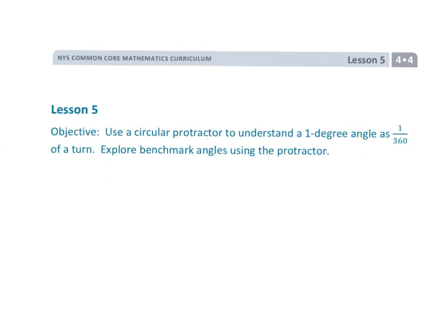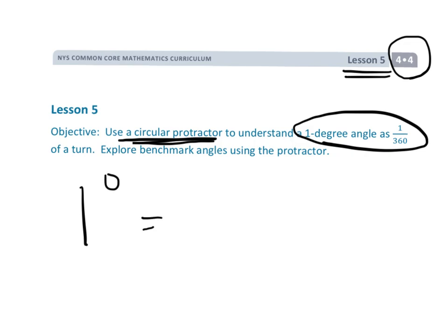And that is grade 4, module 4, lesson 5, using a special protractor called a circular protractor to really understand how to measure angles and really, in particular, understand that 1 degree is equal to 1/360th of a turn.